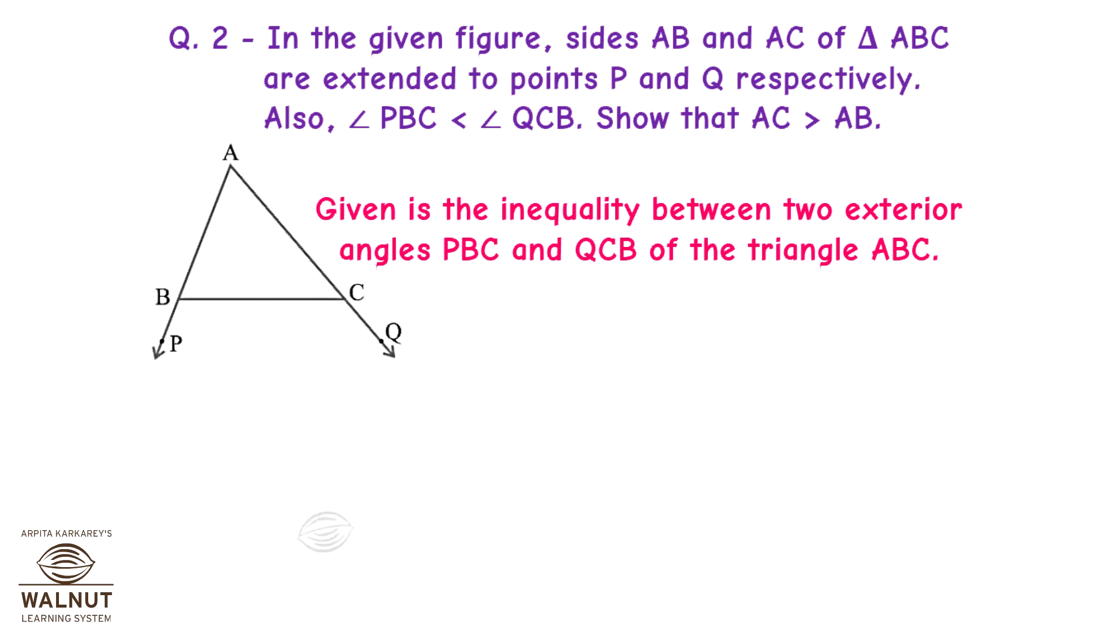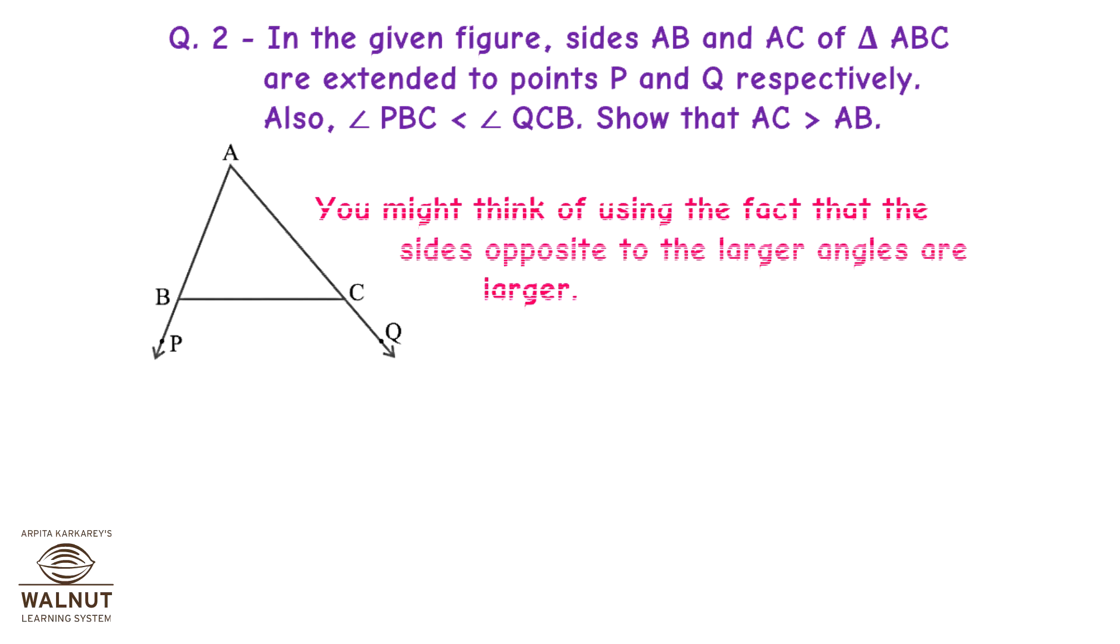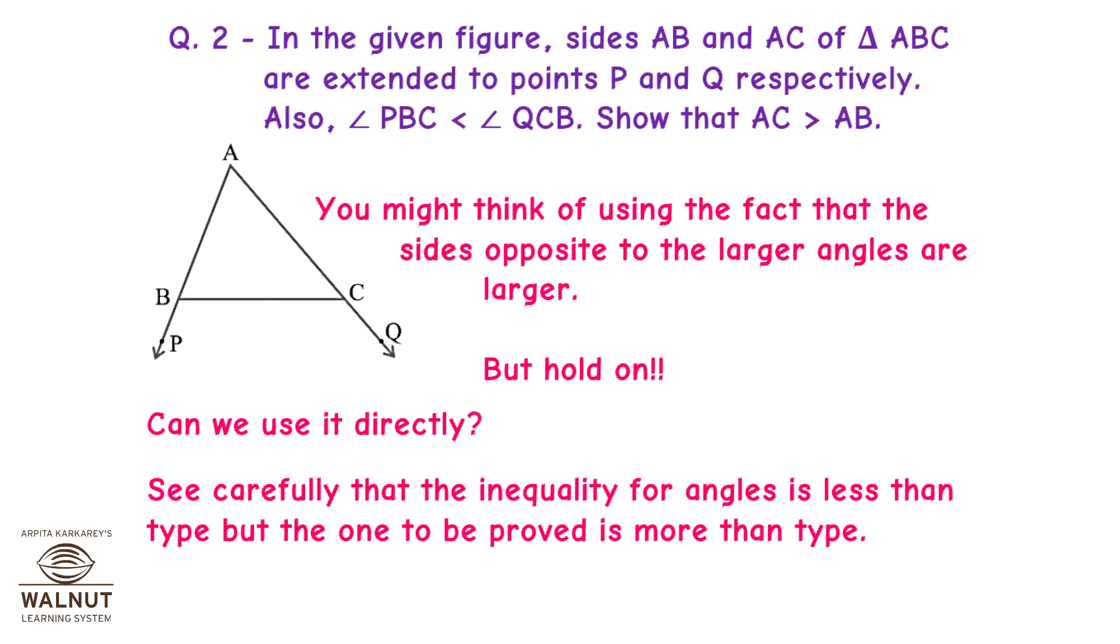Given is the inequality between two exterior angles, PBC and QCB of the triangle ABC. We have to prove that AC is greater than AB. That is, based on the given information about triangles, we are asked to establish the inequality between the two sides AC and AB of the triangle. How to proceed? See carefully that the inequality for angles is less than type, but the one to be proved is more than type. What should we do then?